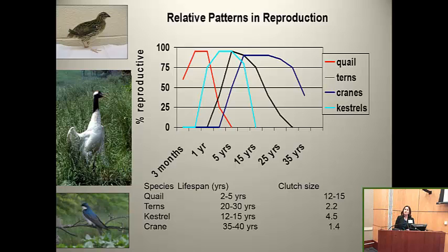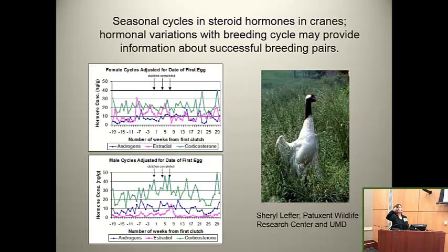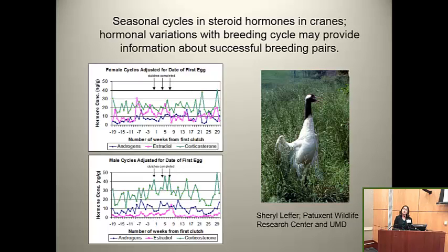Birds are also very plastic. A difference between birds and mammals is that they retain the ability to reproduce their hair cells, and they have other forms of plasticity, including neuroplasticity. In cranes, we can follow their reproduction very easily with fecal steroids. We can relate the steroids and stress levels and look at personalities. In one study, we followed ten pairs and linked them back to who produced successful offspring — the nervous females did not raise good chicks.